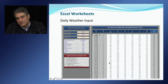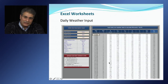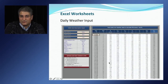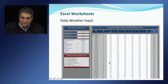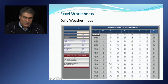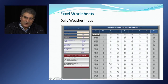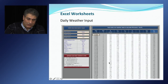The daily weather input worksheet is used to input daily weather data for estimating daily reference evapotranspiration, crop evapotranspiration, and ET of applied water. Weather data includes solar radiation, maximum and minimum air temperature, wind speed, dew point temperature, and precipitation. If solar radiation, T-max, T-min, wind speed, and dew point temperature are input, the application uses the daily Penman-Monteith equation to calculate ETo. If only maximum and minimum temperature are input, the program automatically uses the Hargreaves-Samani equation to calculate ETo.